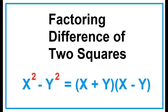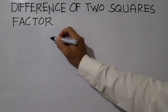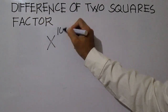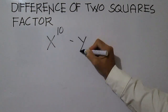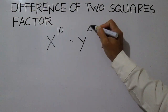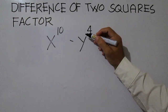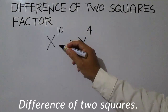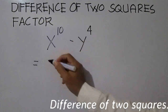Factoring difference of two squares. Factor x to the power of 10 minus y to the power of 4. To factor this binomial, rewrite in the form difference of two squares.